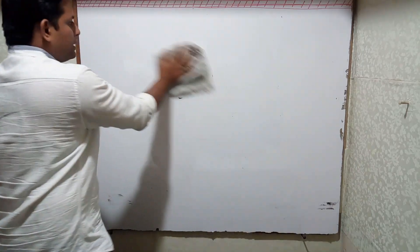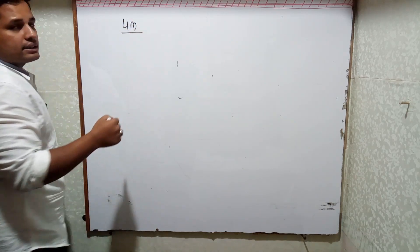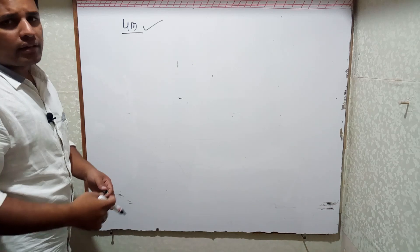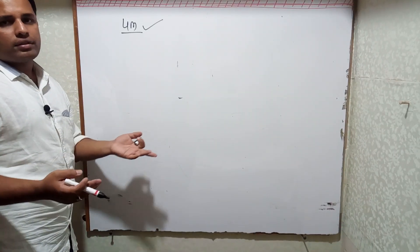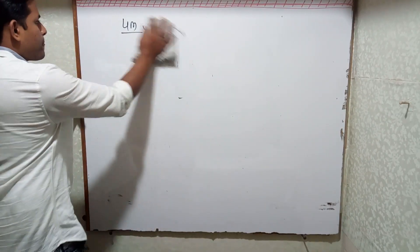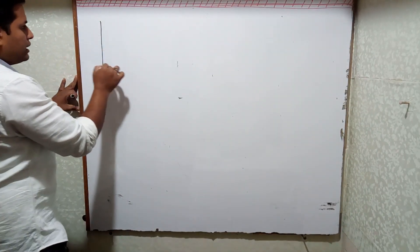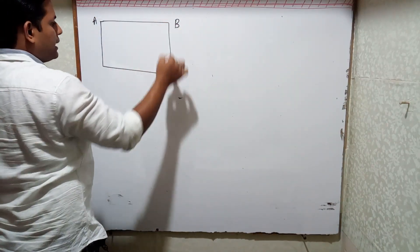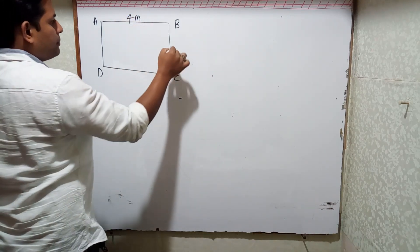I've changed the side to 4 meters so the calculation will be a little easier. The square side is 4 meters — usually they won't ask for centimeters; they give meters. If they give centimeters you can convert, but we'll take it as 4 meters. Let us draw the diagram. Here is a square — let's name the corners A, B, C, D. AB is 4 meters, BC is 4 meters, and all sides are equal.